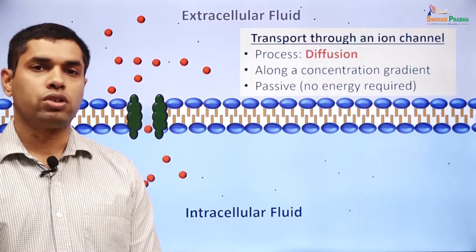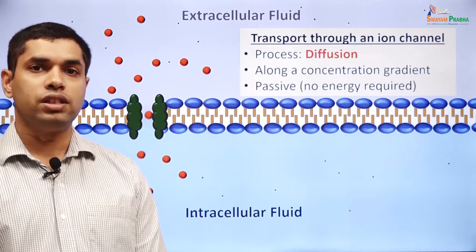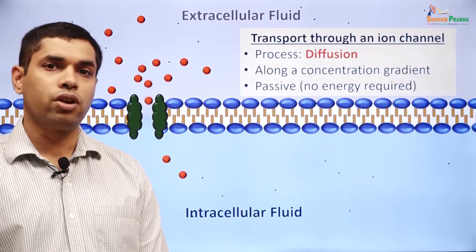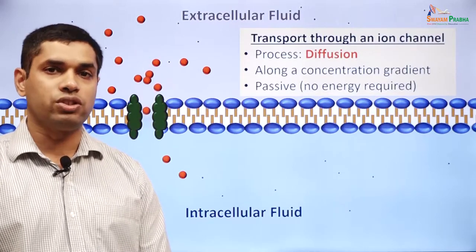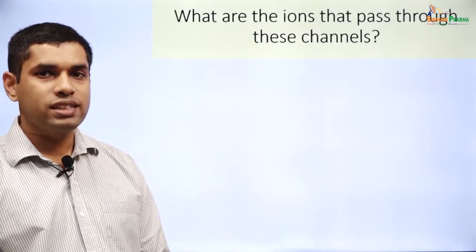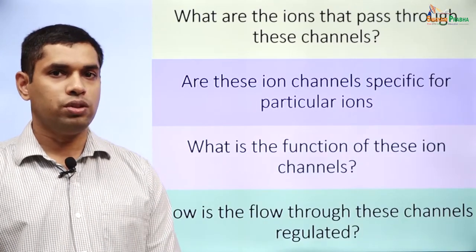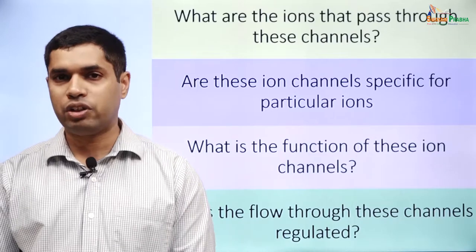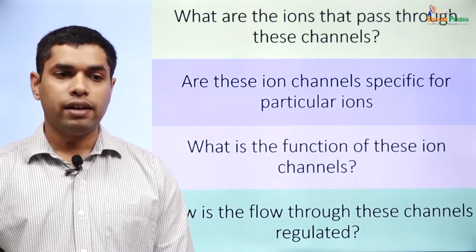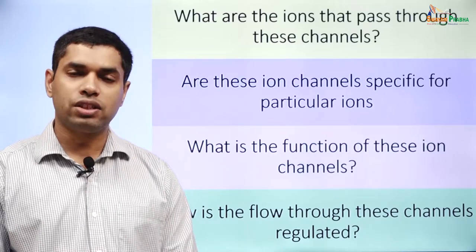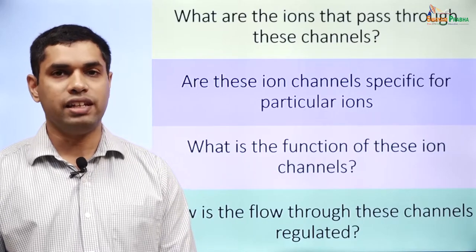It's important to remember that transport across an ion channel is simple diffusion — a substance moving from an area of higher concentration to an area of lower concentration and not requiring energy because the energy is present in the concentration gradient. We will now begin a study of ion channels in more detail. Whenever we consider any ion channel, there are four basic questions to keep in mind: What is the ion that passes through this channel? Is the ion channel specific for that ion? What is the function of this ion channel in normal physiology or in a diseased state? And how is the flow through this ion channel regulated, or what is the gating?